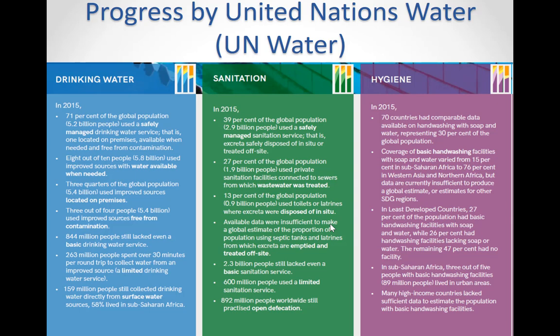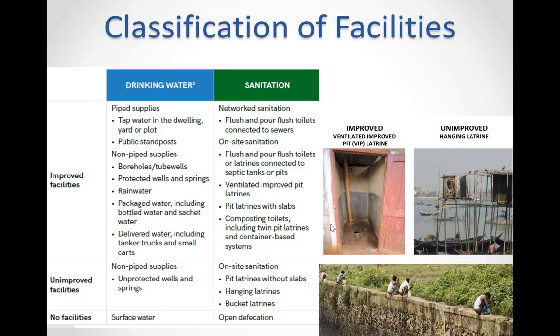Here we are showing more updated statistics from UN Water, the United Nations interagency coordination mechanism for freshwater-related issues including sanitation. This slide shows the water, sanitation and hygiene related progress made up to 2015. This table lists examples of improved and unimproved facility types — please be sure you are able to identify which ones are improved and which are unimproved sources.